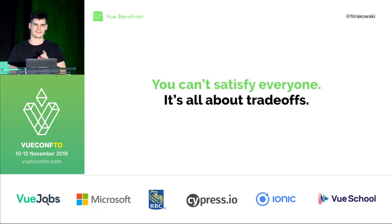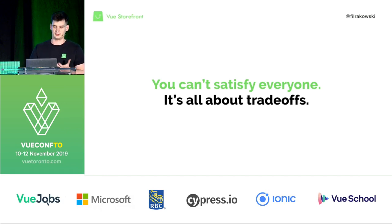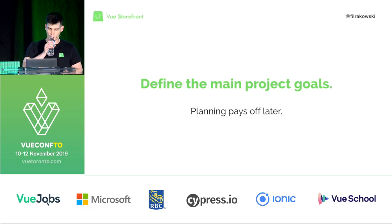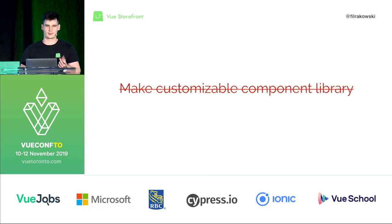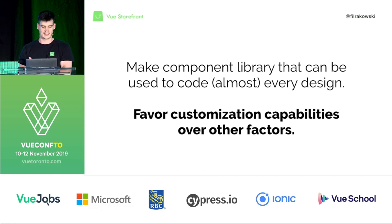The first thing you need to know is that you can't satisfy everyone, because it's all about trade-offs. A lot of libraries fail at heavy customization, but in return they are very easy to upgrade. Everything is about trade-offs, and we need to define the main project goals to know how to decide on those trade-offs. Our goal for Storefront UI was to make a component library that can be used to code almost every design.